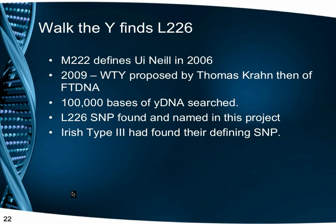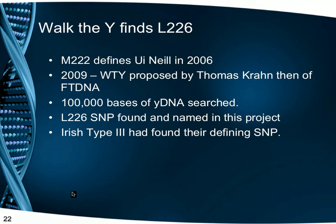In November 2009, Thomas Cran, then of FamilyTreeDNA, proposed an extended SNP testing project called Walk the Y. With large sections of the Y chromosome, about 100,000 bases in total, would be searched for new SNPs. Several members of the Irish Type 3 cluster invested in the testing of one of our number, and a SNP L226 was found. Subsequent testing proved that this was the elusive SNP we'd been looking for to define Irish Type 3, or the Dalcassian haplogroup.